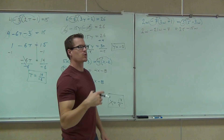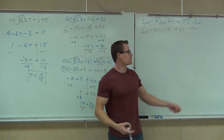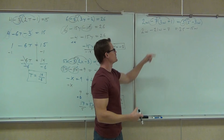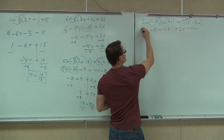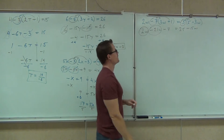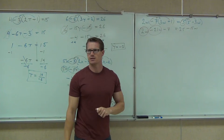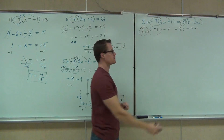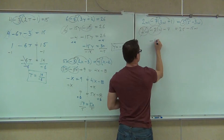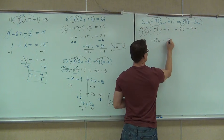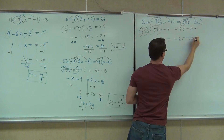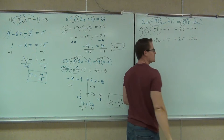After that we're looking to combine like terms. I don't have any like terms on the right side, but I do have some on the left. When I combine those, I get negative 19w.